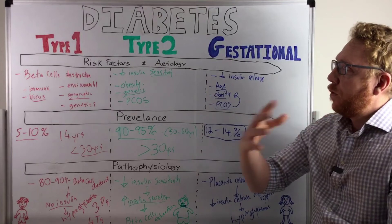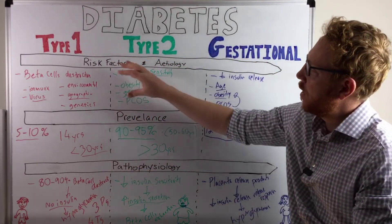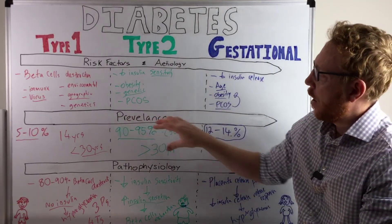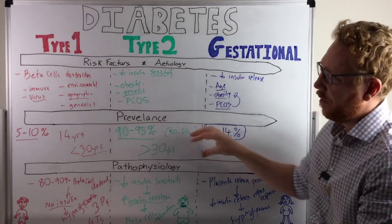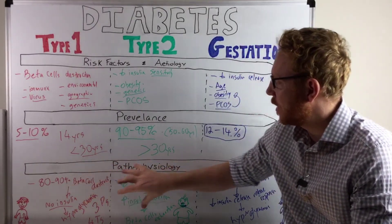So there we have it. You've seen, hopefully, the difference between type 1, type 2, and gestational diabetes. The risk factors, the etiology, how many people, kind of all the percentages that fit in with each and how they present or how their pathophysiology is different between the three categories.